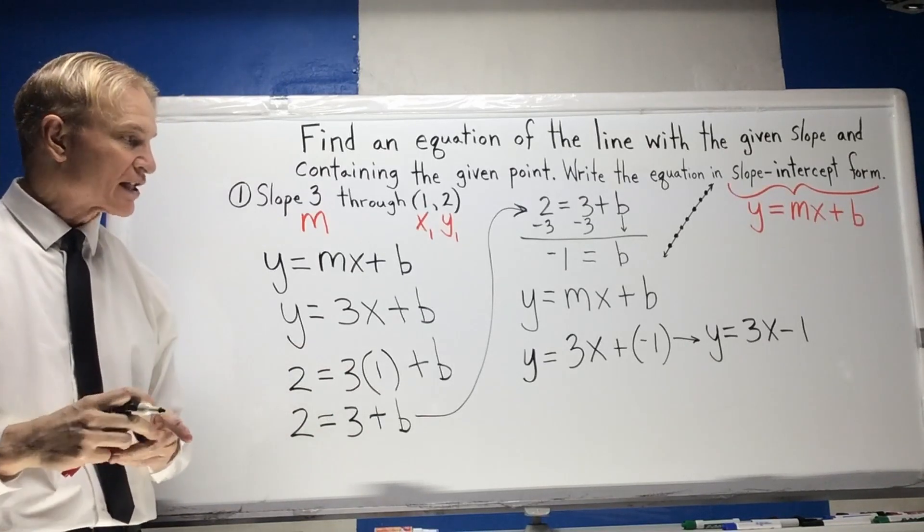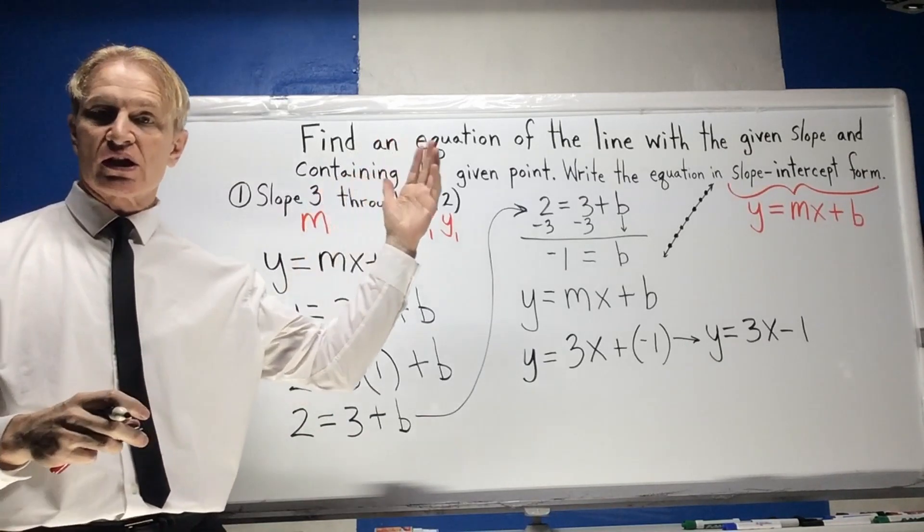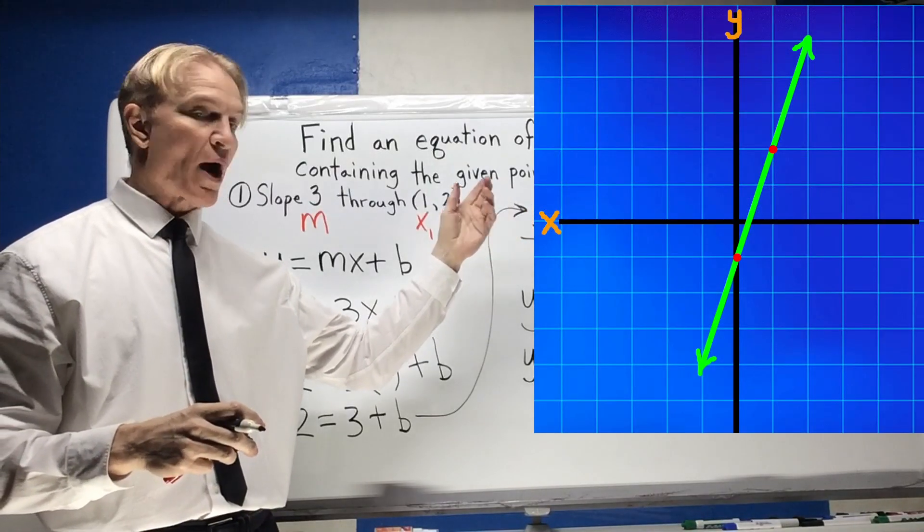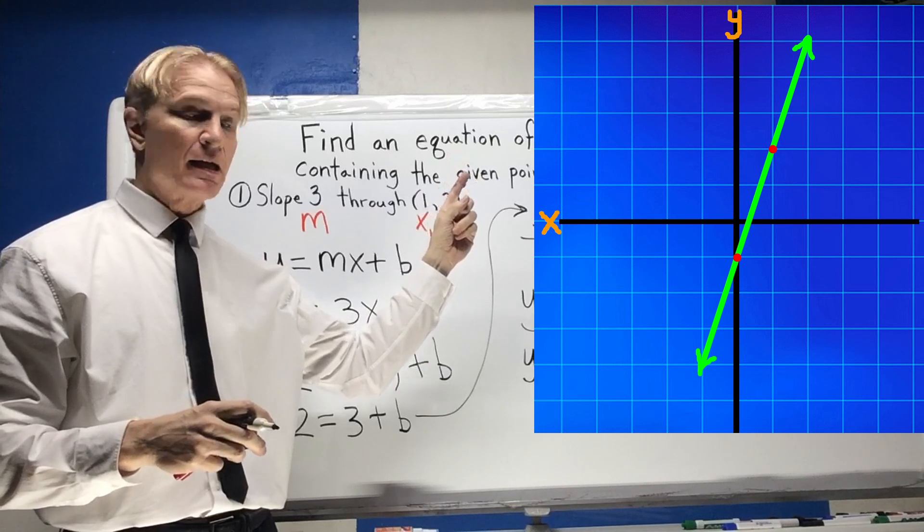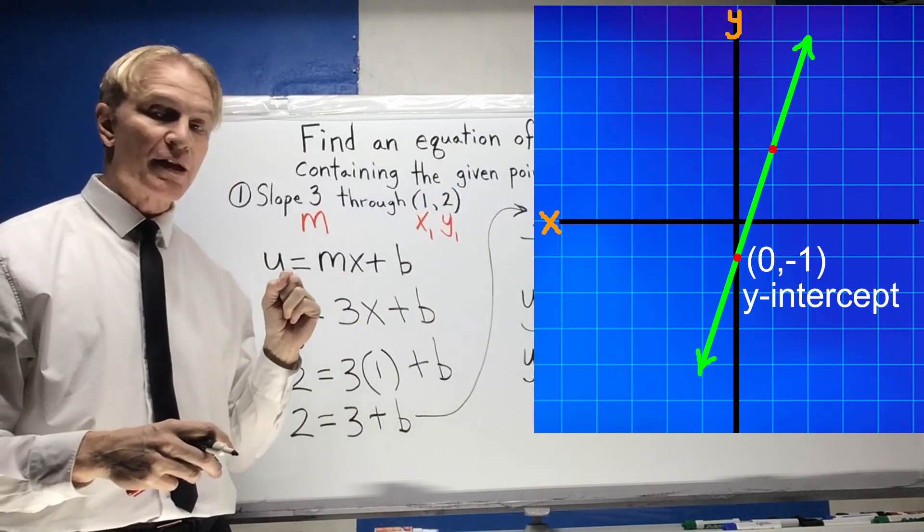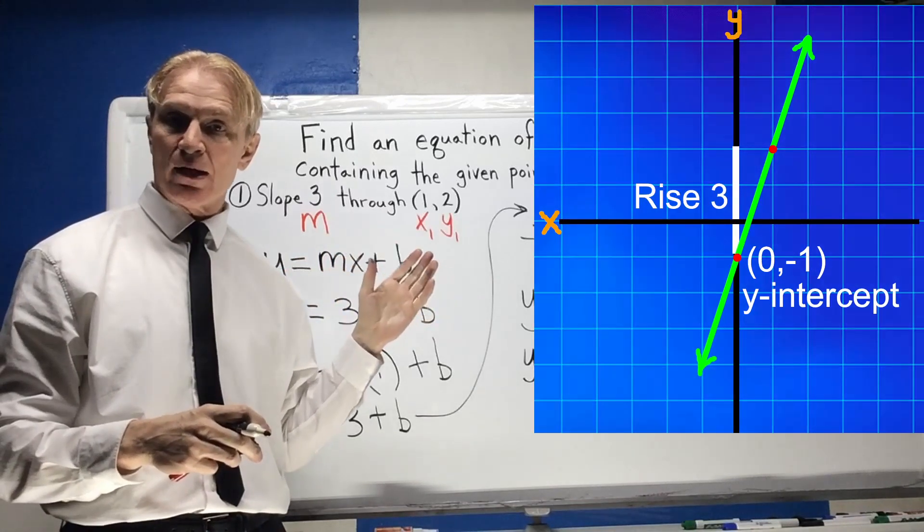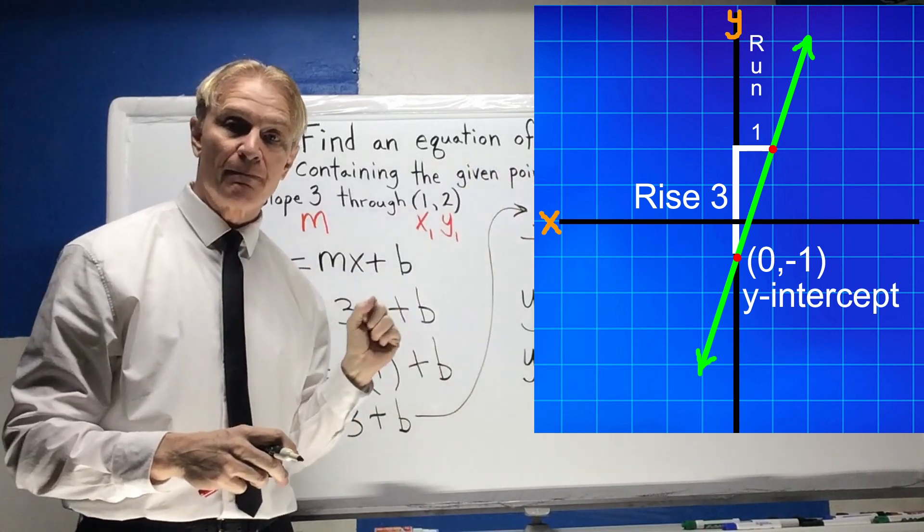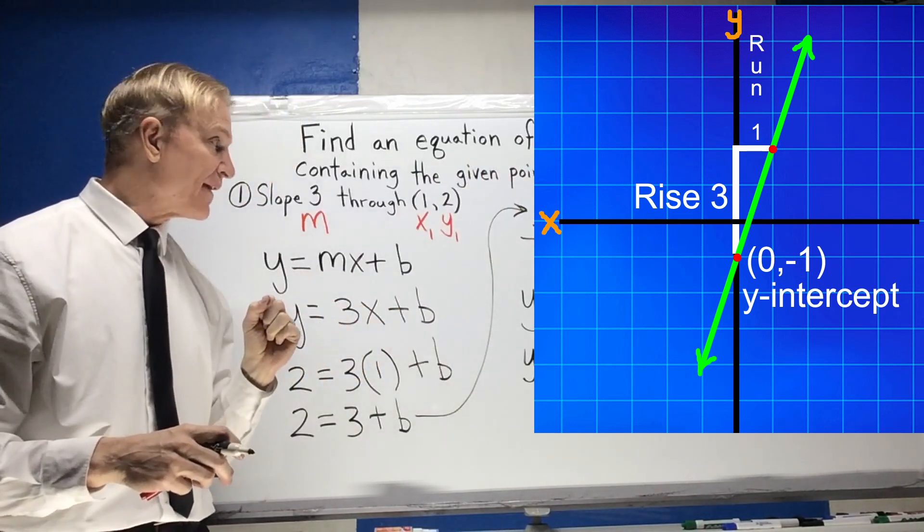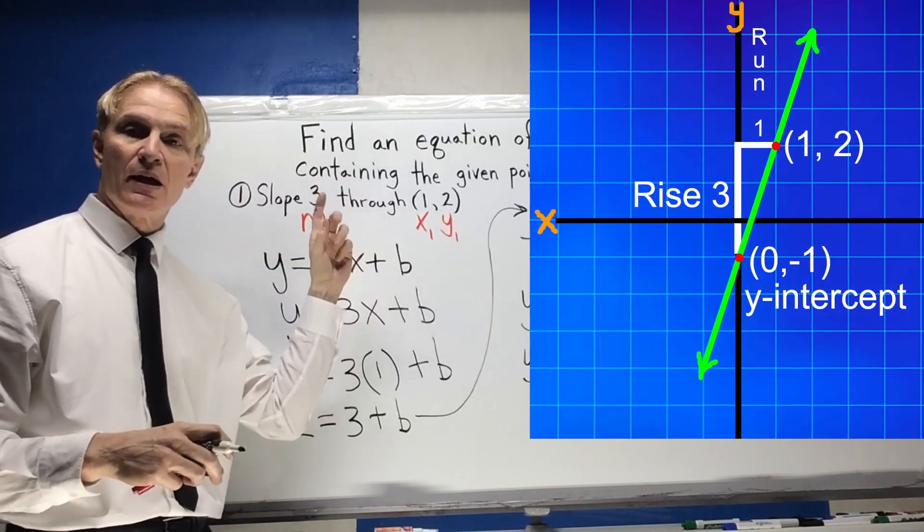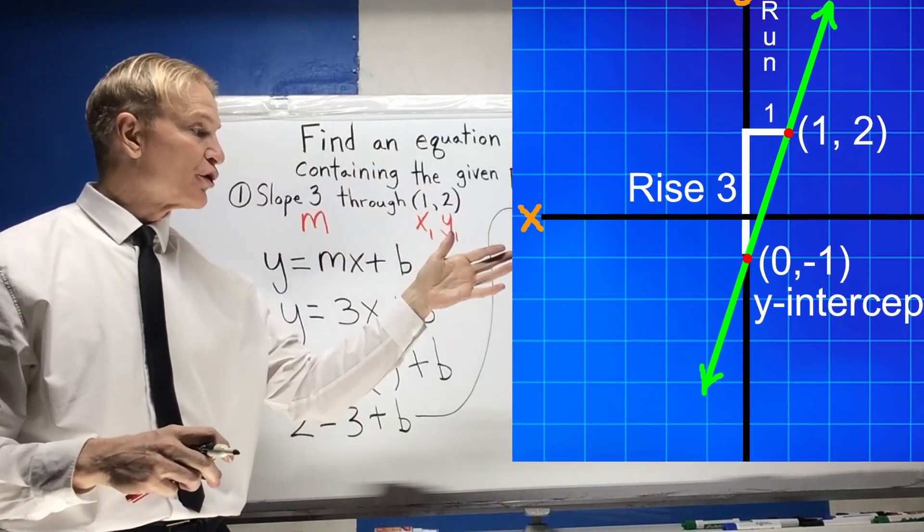So here's what the graph looks like. Of course, the graph is going to look like this, where your y-intercept is at negative 1. And your slope is 3 or rise 3, run 1. So you rise 3, run 1. And then here it's containing the point 1 comma 2.